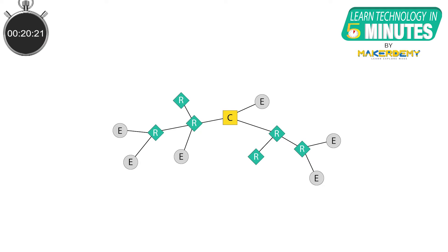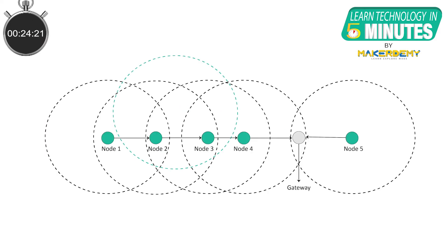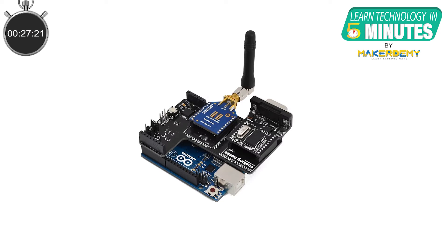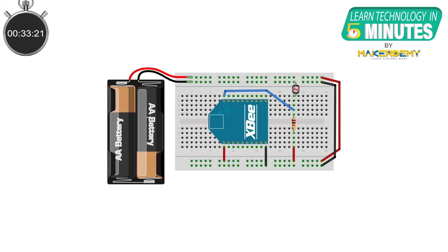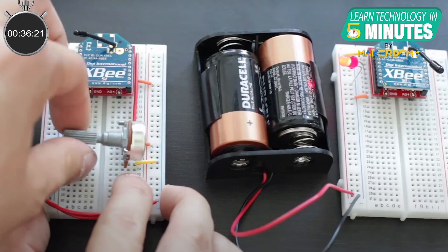Before we get into the 3 types of devices, let's learn some basics. Each unit in a Zigbee network can be called a node. A node generally consists of a microcontroller, a transceiver, and an antenna. Sometimes Zigbee nodes can be configured to work without a microcontroller, for simple digital and analog operations.